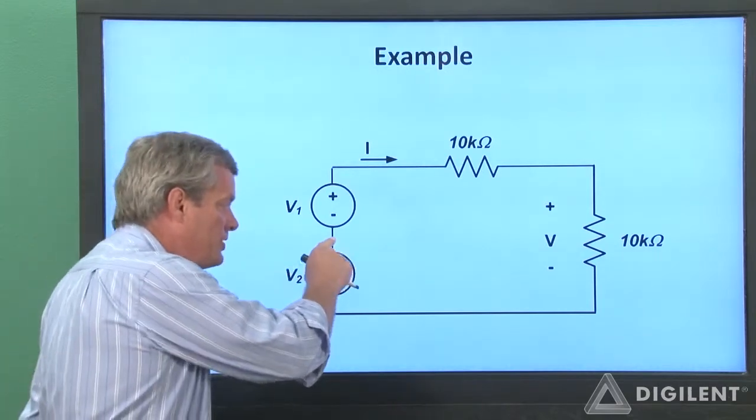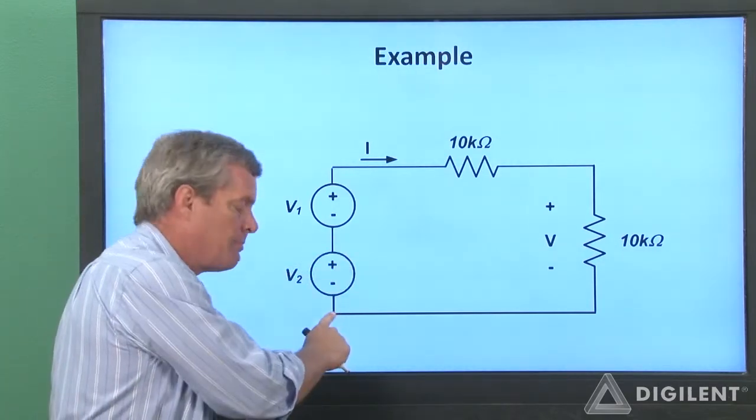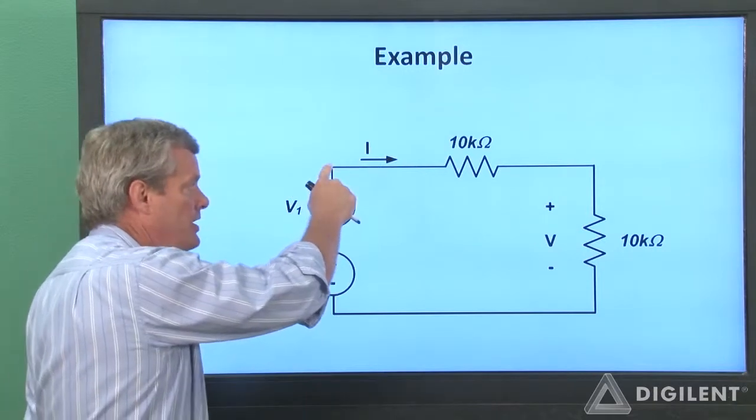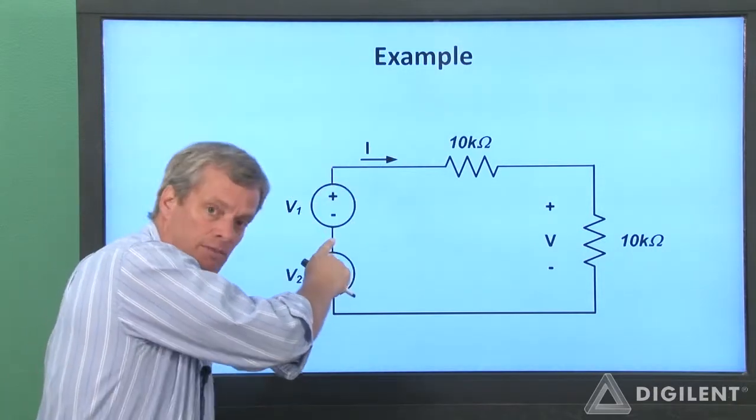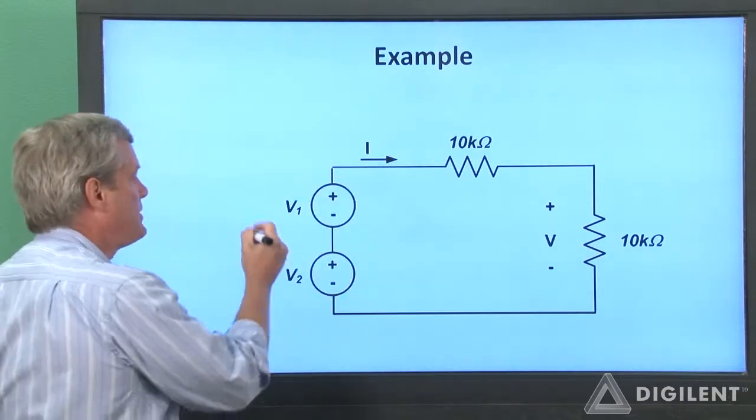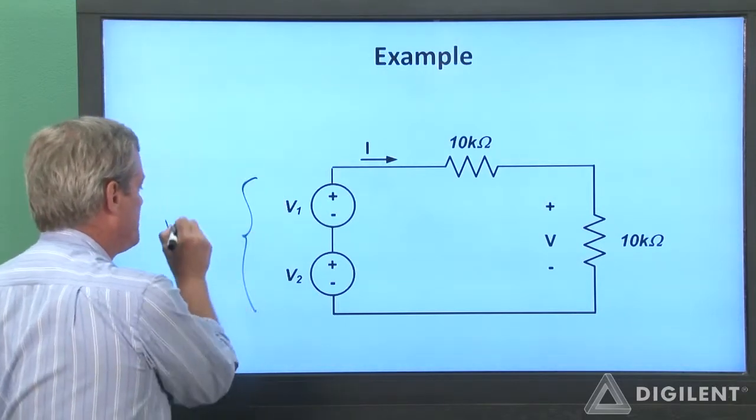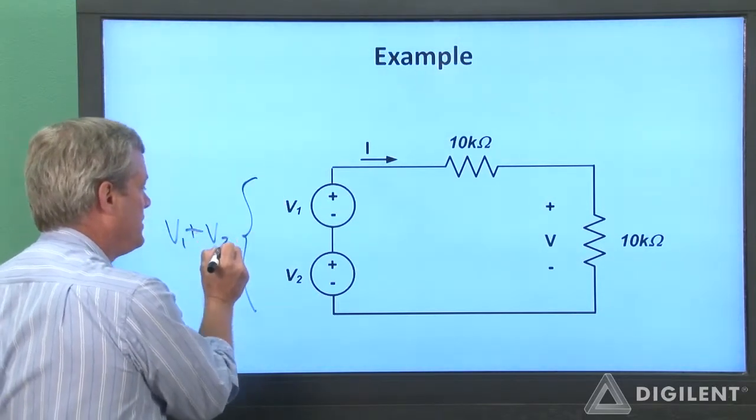This voltage here is V2 volts above this voltage, and this voltage here is V1 volts above this voltage. The two of these together have a voltage difference which is V1 plus V2.